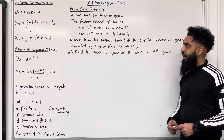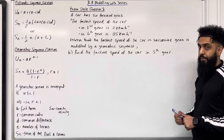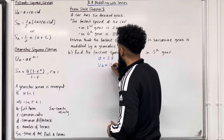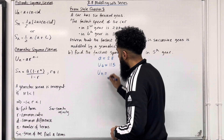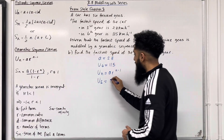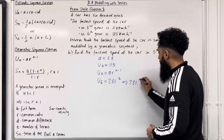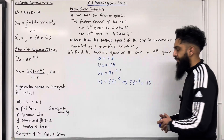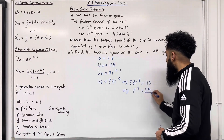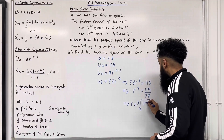Let's have a look at part B of exam-style question 3. Given that the fastest speed of the car in successive gears is modelled by a geometric sequence, find the fastest speed in fifth gear. From the given information, A = 28 and U₆ = 115. The nth term of a geometric sequence is Uₙ = ARⁿ⁻¹, so U₆ = 28 × R⁵ = 115. This implies R⁵ = 115 ÷ 28, hence R = (115/28)^(1/5), the fifth root of 115 over 28.